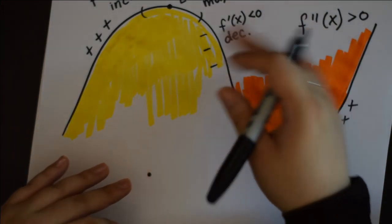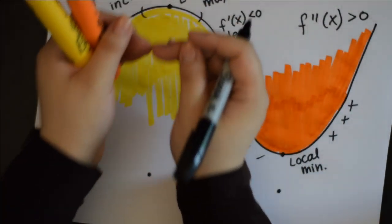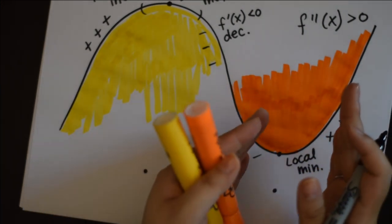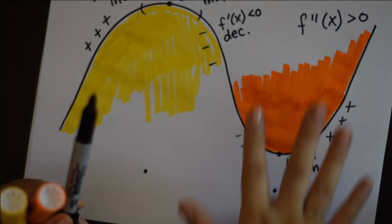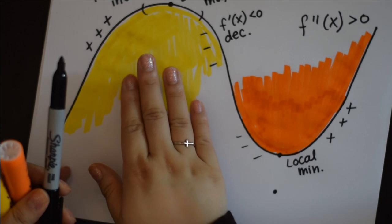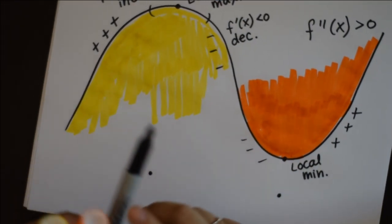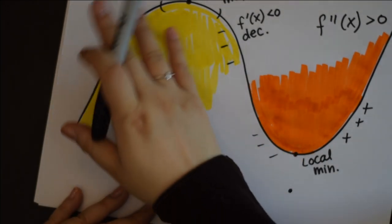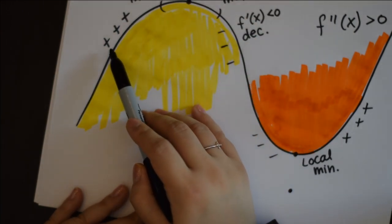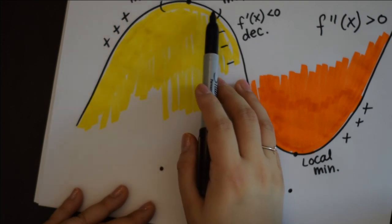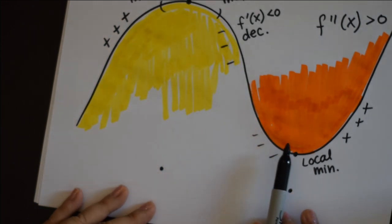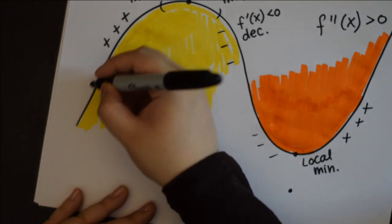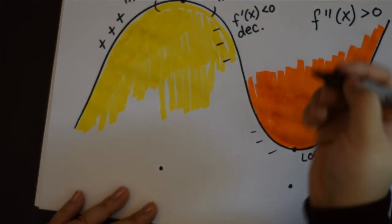The fancy word for upward-facing, or holding water, is concave up, and downward-facing is concave down. If f''(x) at a particular x value is greater than zero, the graph is concave up at that point. If it's less than zero, the graph is concave down. So for points here, here, here — where our graph is downward-facing — f'' is negative, and then it becomes positive on the other side. The point where the concavity transitions from negative to positive is called an inflection point, where f'' equals zero.